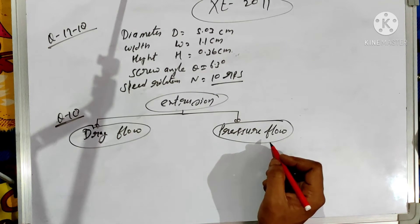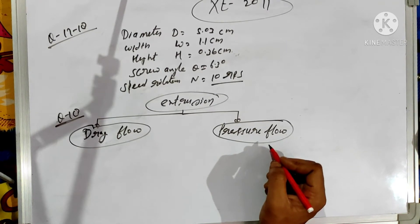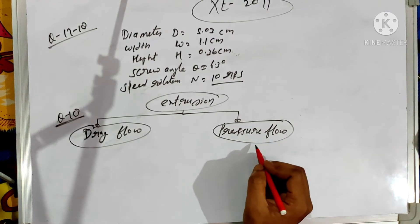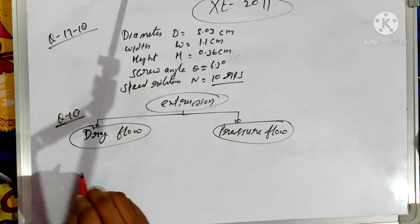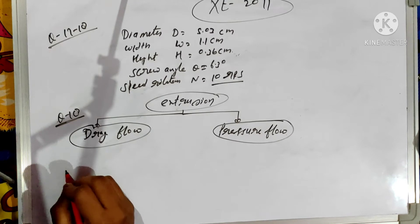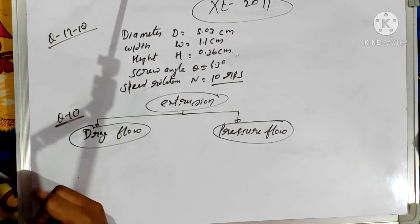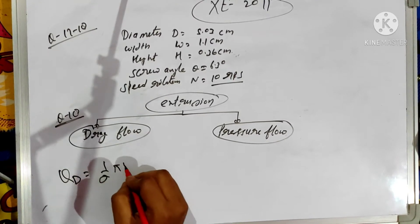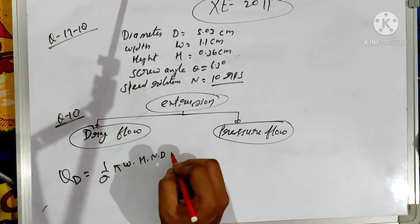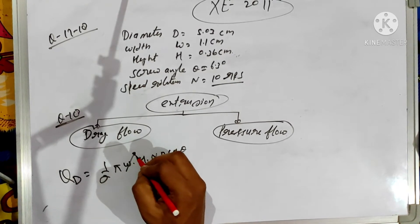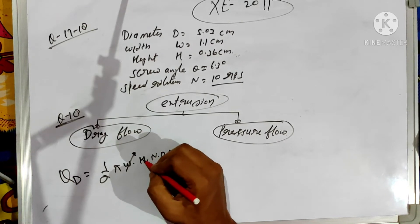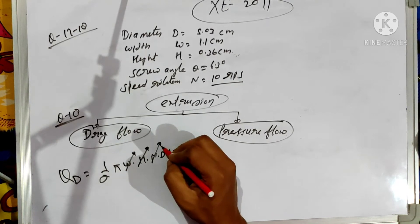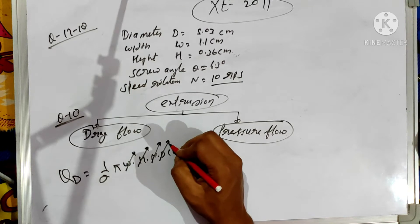The screen pack and breaker plate is used to stop the unmelted polymer material and throw it back to the melting zone where unmelted polymer starts melting. Then the discharge due to drag flow QD is given by: QD = (1/2) × π × W × H × N × D. Here W is the width of the screw, H is the height of the flight, N is the speed of the screw.